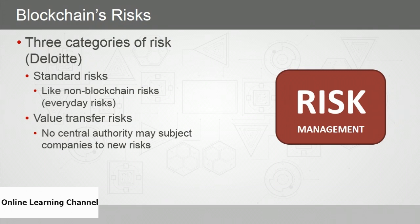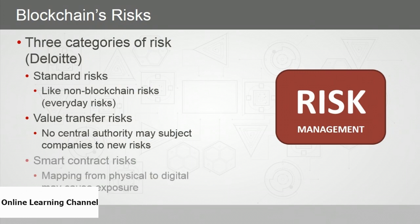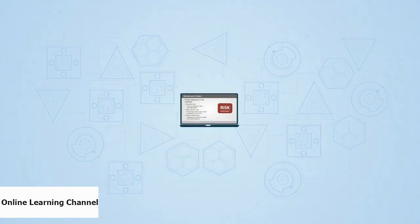And there are smart contract risks. In blockchain, smart contracts — transactions representing elements of any business deal or contractual agreement — are stored in the blockchain. There may be a risk in mapping these complex elements from the physical world to the digital world, potentially causing exposure.